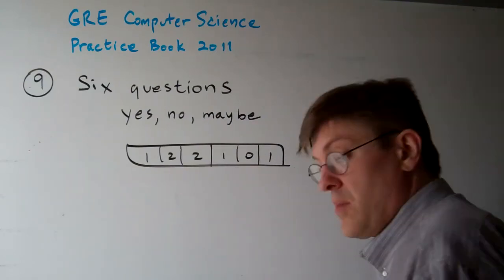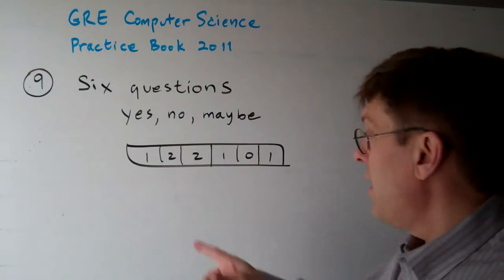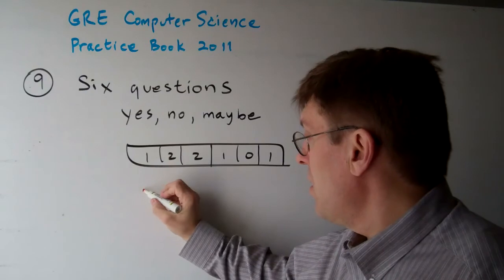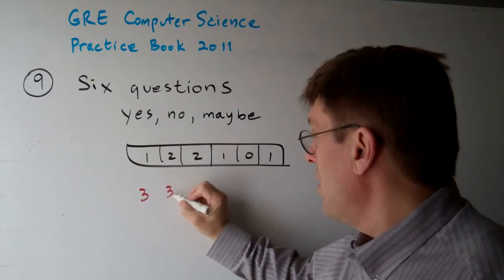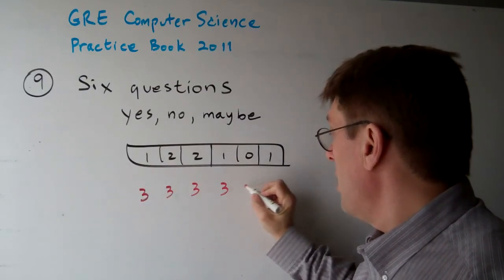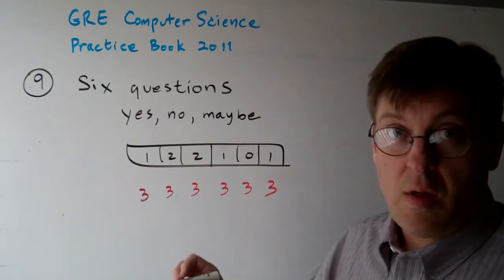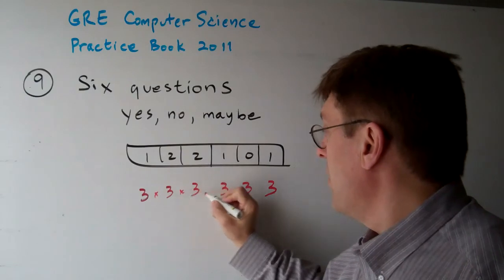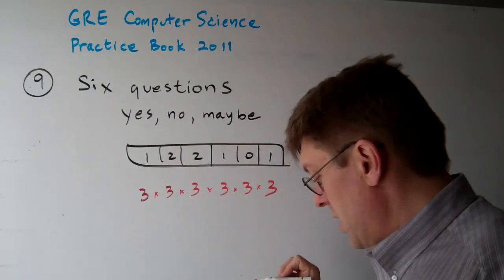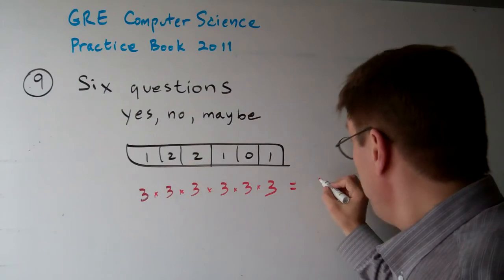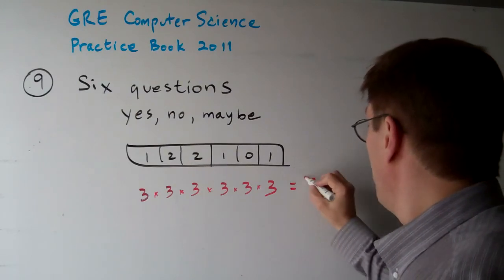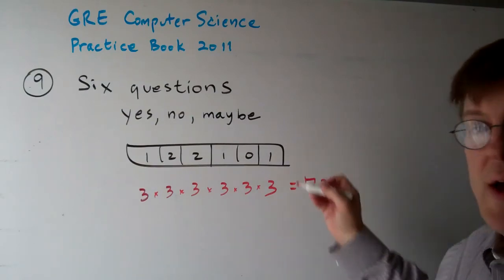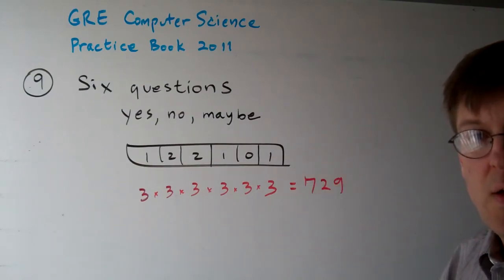Each question can have one of three answers. So you can have 3 here, 3 here, 3 here, 3 here, 3 here, and 3 here. Basically, you multiply those all together and that gives you 729. There are 729 different ways to answer that questionnaire.